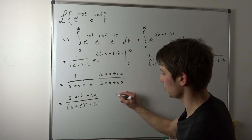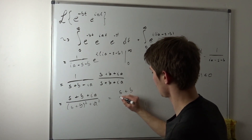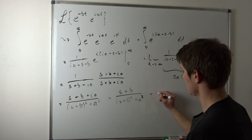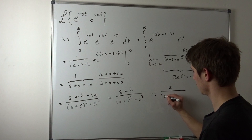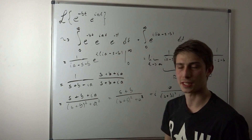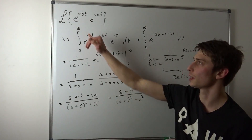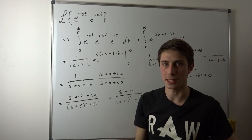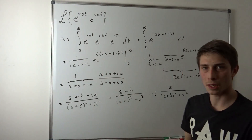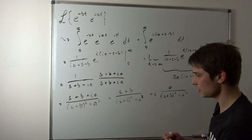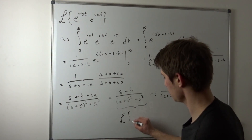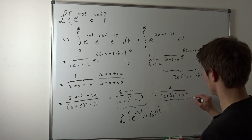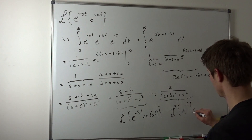And we can break this up into its real and imaginary parts. So that's (s plus b) over [(s plus b) squared plus a squared], plus i times a over [(s plus b) squared plus a squared]. As you might notice, we can split this Laplace transform up into the Laplace transform of e to the minus bt times cosine(at), plus i times the Laplace transform of e to the minus bt times sine(at). The cosine function is just the real part — that is the Laplace transform of e to the minus bt cosine(at). And this imaginary part is the Laplace transform of e to the minus bt times sine(at).